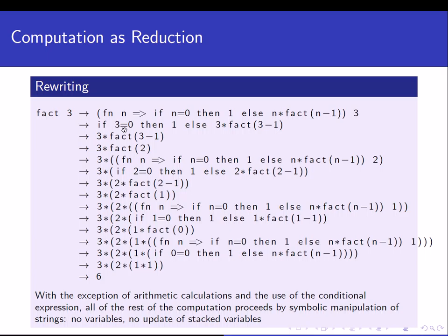Since 3 is not equal to 0, the then-part is false and the else-part is true. So we reduce the if-expression to 3 times fact of 3 minus 1. And since 3 minus 1 is 2, it becomes 3 times fact of 2. Now we have a complex expression, and we take the sub-expression `fact 2` and rewrite that one.